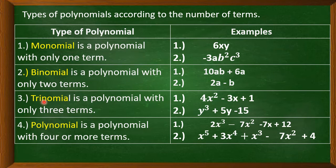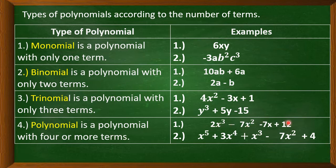The third type is trinomial — a polynomial with 3 terms. For example, 4x² minus 3x plus 1 has 3 terms, and y³ plus 5y minus 15 also has 3 terms. Next, a polynomial with 4 or more terms is simply called a polynomial. For example, 2x³ minus 7x² minus 7x plus 12, or x⁵ plus 3x⁴ plus x³ minus 7x² plus 4 — these are called polynomials.